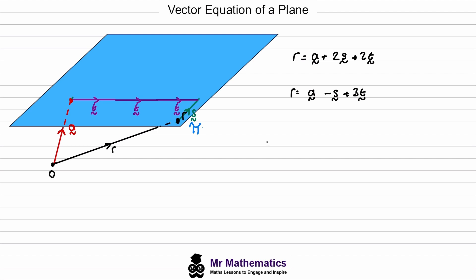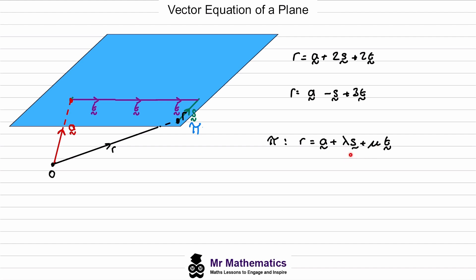The general equation is: r equals a, the position vector, plus lambda times direction vector s, plus mu times direction vector t. This is called the parametric equation of a plane — we call it parametric because lambda and mu are our two parameters. In the next example I'm going to show you how to find the equation of a plane from three points.